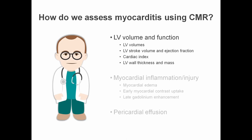In summary, assessing myocarditis using CMR is based around the Lake Louise criteria. We begin by assessing left ventricular volume and function — quantifying LV volume, stroke volume, ejection fraction, cardiac index, wall thickness, and LV mass. We then look for evidence of myocardial inflammation or injury: myocardial edema on T2 imaging, early myocardial contrast uptake, and late gadolinium enhancement in a non-ischemic distribution. In some cases we may also see pericardial involvement such as a pericardial effusion. All of these features need to be incorporated into your CMR report in a myocarditis study.